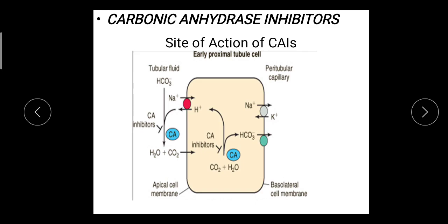Our first class under diuretics is carbonic anhydrase inhibitors. These diuretics act on the proximal convoluted tubule — that is the site of action of carbonic anhydrase inhibitors. Now we look at the mechanism of action.